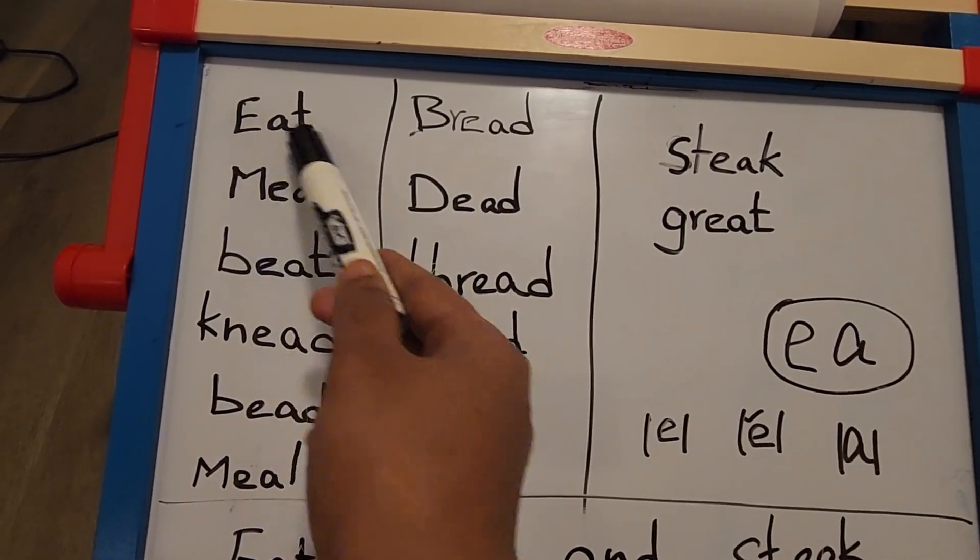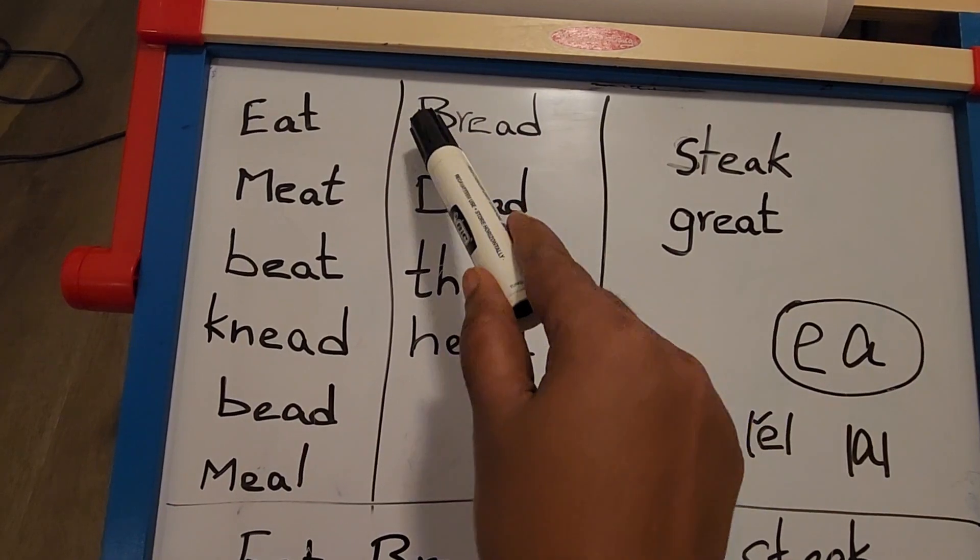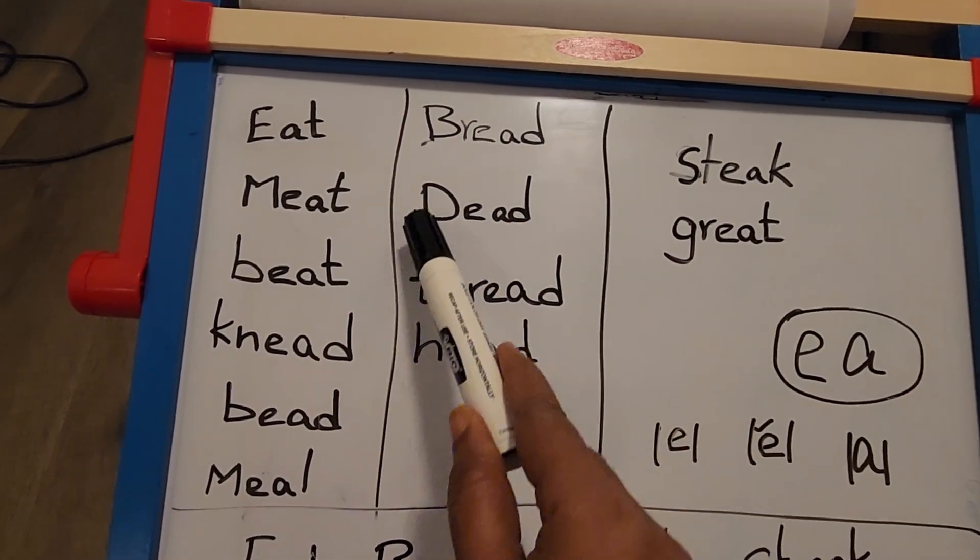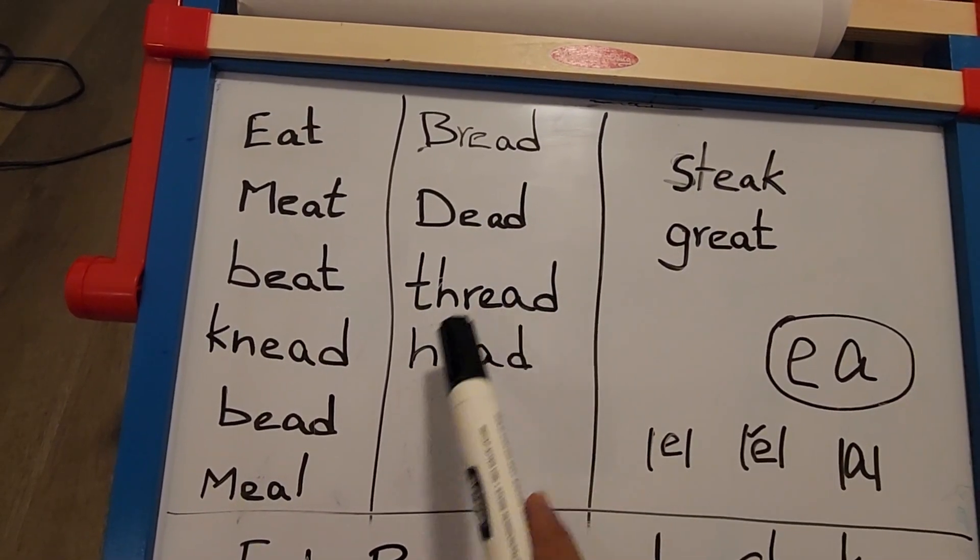Here, bread - it's not breed, it's bread. Dead, thread, head. Here EA makes short E sound.